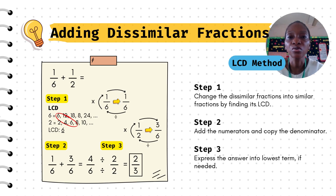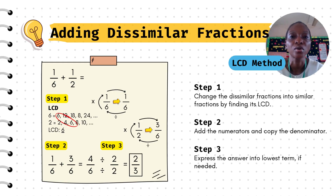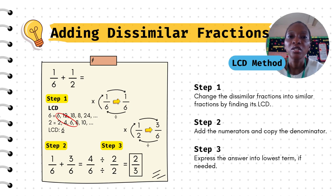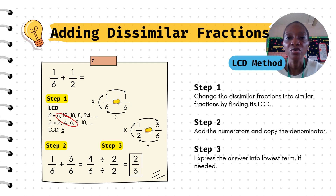Now let's go to an example. For example, you have 1 over 6 plus 1 over 2. Step 1: you have to look for the LCD of 6 and 2, the denominators. That means you look for their common multiples — for 6 you have 6, 12, 18, 24, and for 2 you have 2, 4, 6, 8, 10.